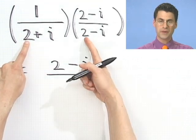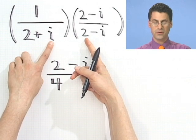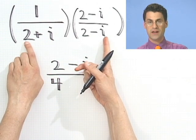On the bottom, 2 times 2 is 4. Then I have an inside term of 2i, an outside term of minus 2i, and they cancel.